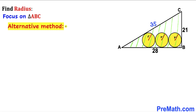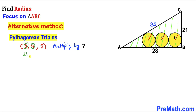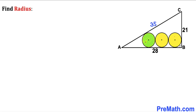Here's an alternative approach: instead of using the Pythagorean theorem we could use the Pythagorean triplet 3, 4, 5. Multiplying each by 7 gives us 21, 28, and 35 — so no wonder our missing side turns out to be 35 units.